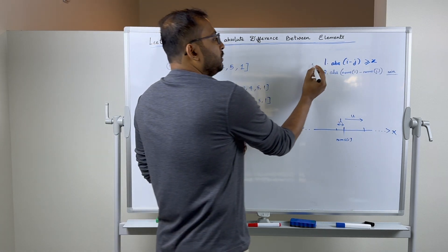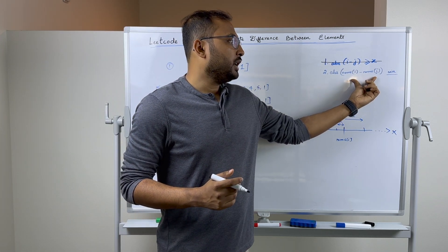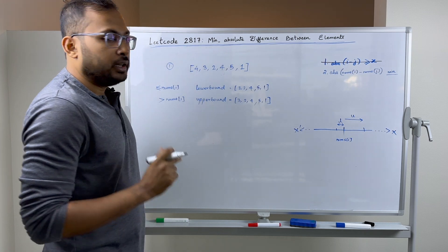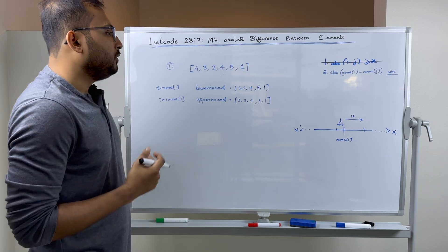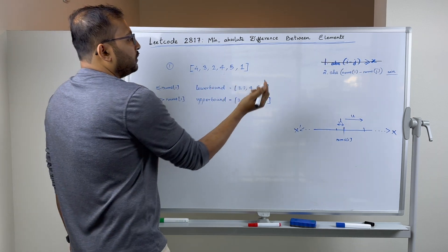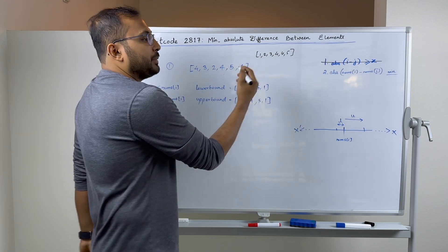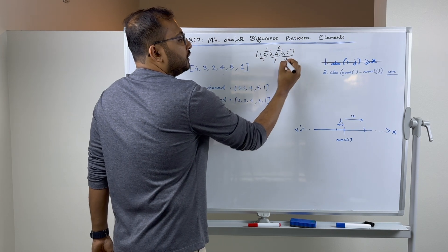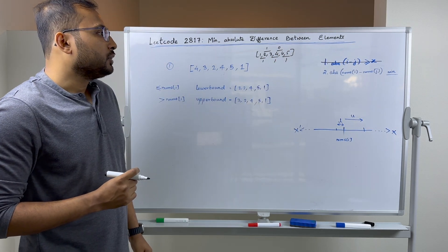If we remove the index constraint, the problem becomes simply finding a pair of numbers in the array for which the absolute difference is minimum. For the array [4, 3, 2, 4, 5, 1], one way is to sort it, giving [1, 2, 3, 4, 4, 5]. Once sorted, we find the absolute difference between adjacent pairs: 1, 1, 1, 0, 1. The minimum is 0, so 0 is the answer. That solves the easier version.